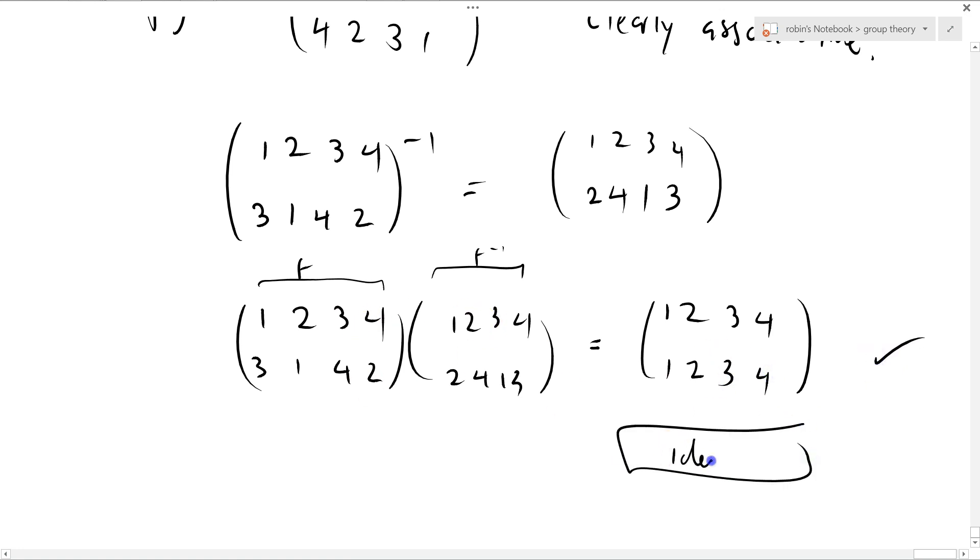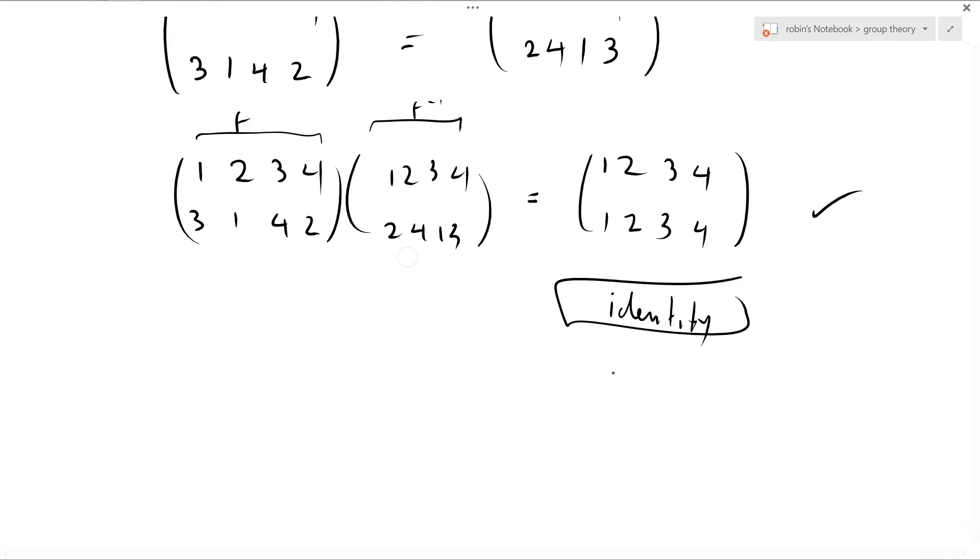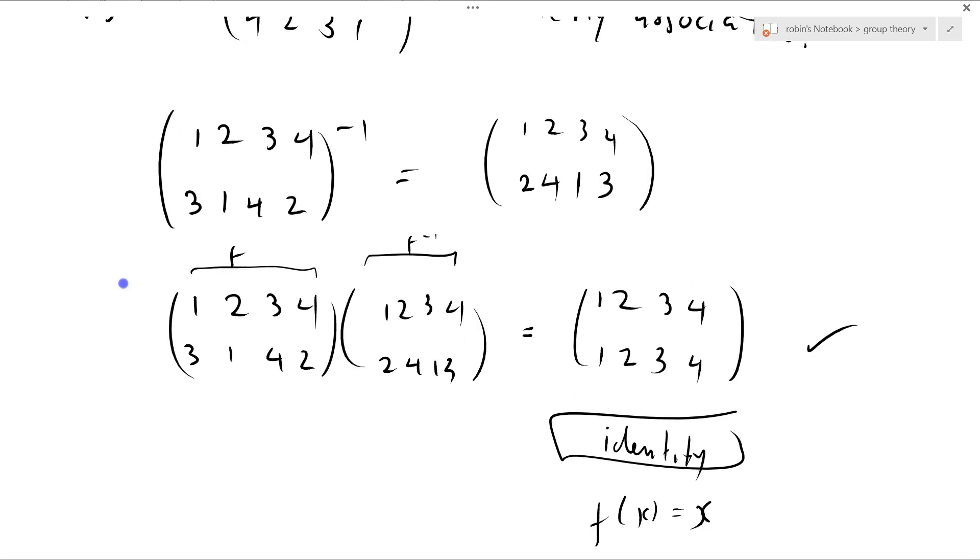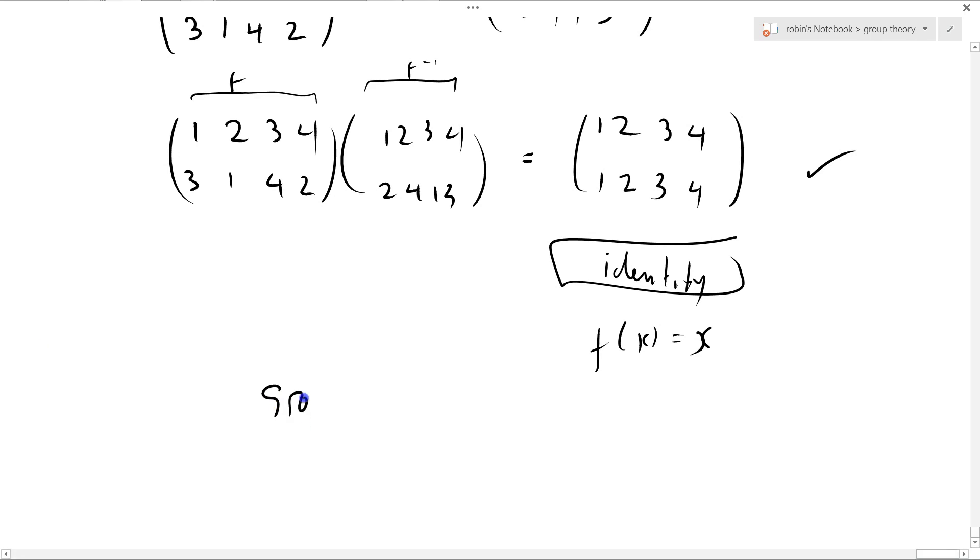So, here is the identity element. It's the identity element, of course, because f(x) = x. I should have started with the identity element, but I didn't. And it's clearly associative, and it's closed, and all that lot. So, it's a nice group.